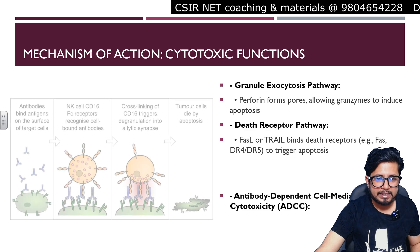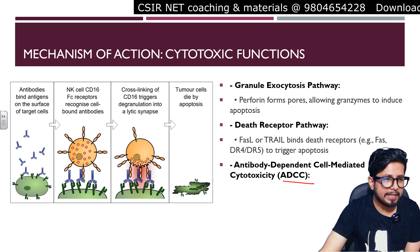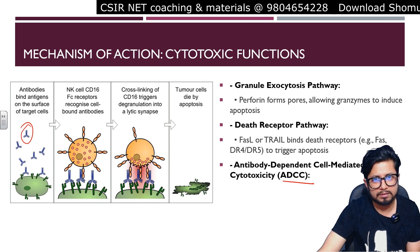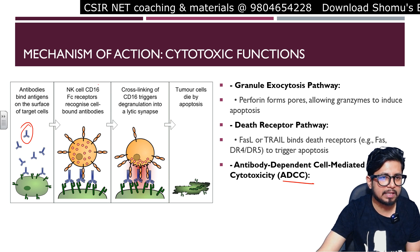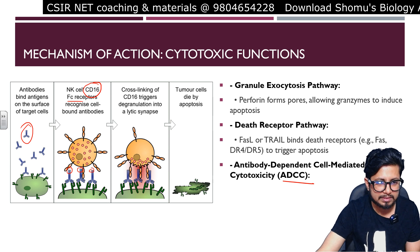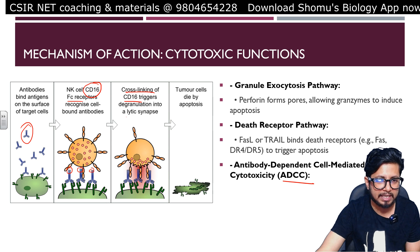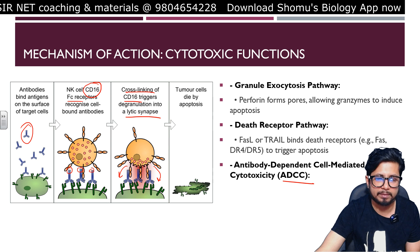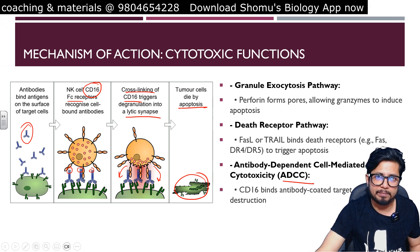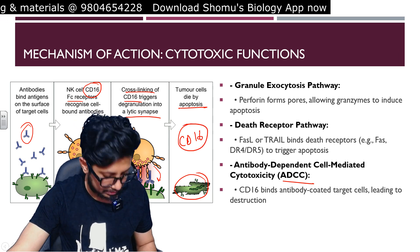In antibody-dependent cell-mediated cytotoxicity (ADCC), antibodies bind to antigens on the surface of a pathogen such as bacteria. Natural killer cells, via CD16, bind to the Fc receptors of these antibodies. Once CD16 recognizes and cross-links with the Fc receptors, this initiates the lytic synapse, releasing chemical factors that ultimately cause the target cell to die via apoptosis. The key trigger is CD16 cross-linking on the surface of natural killer cells.